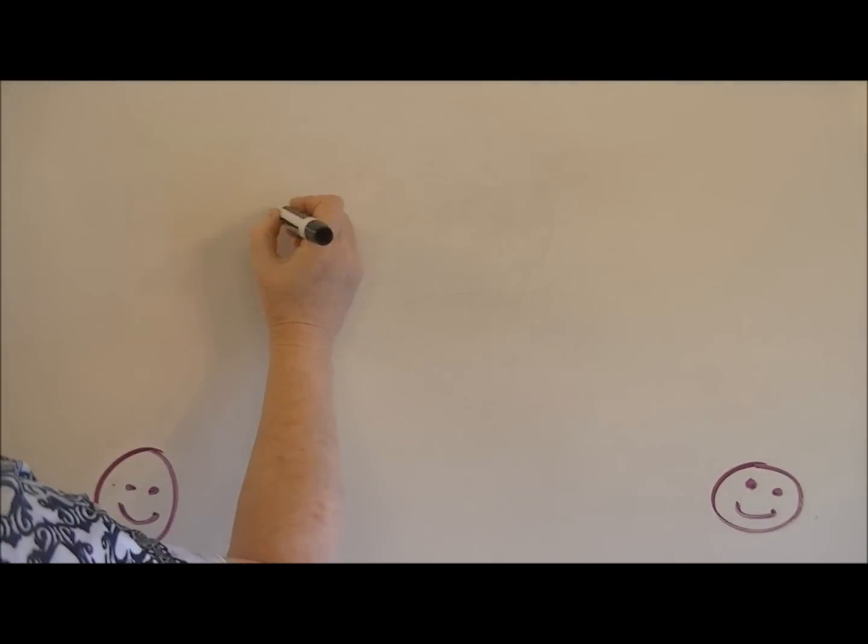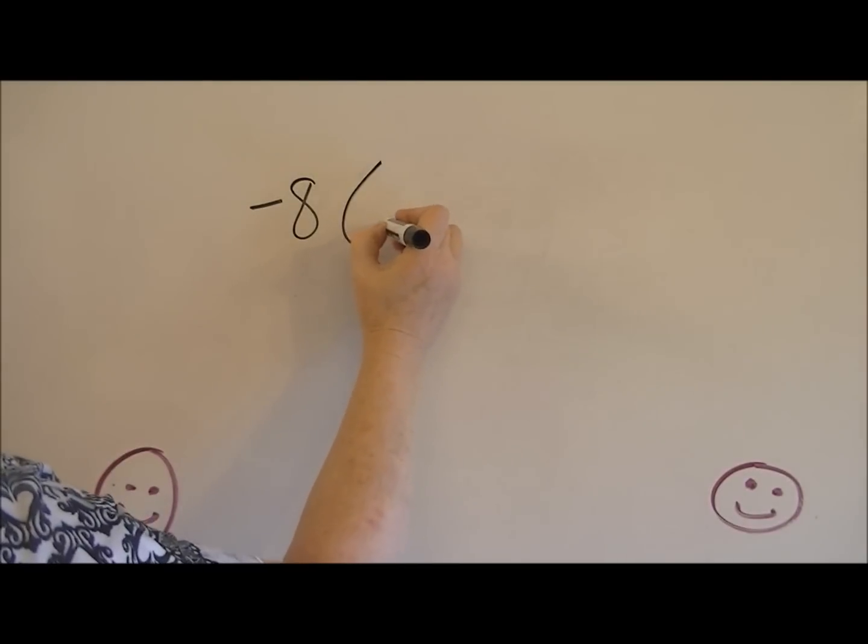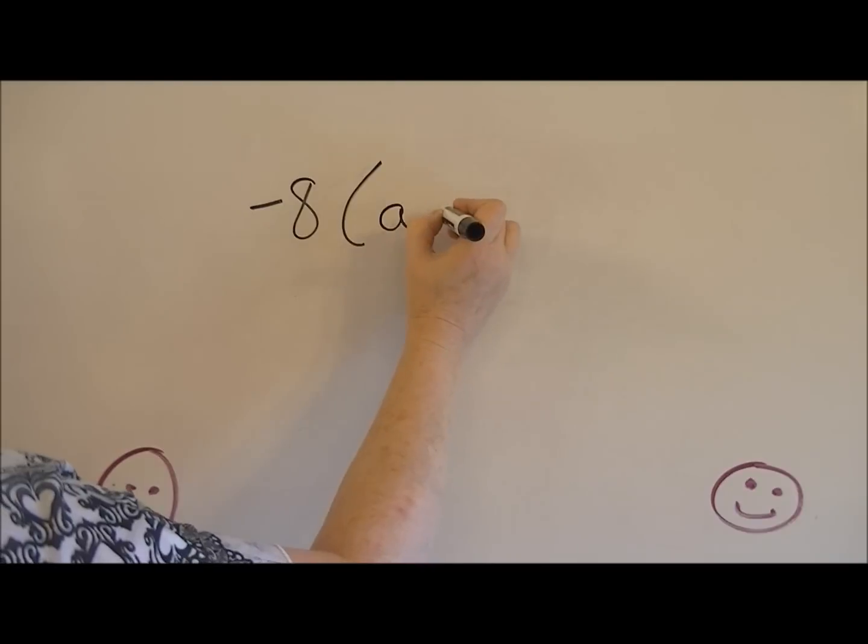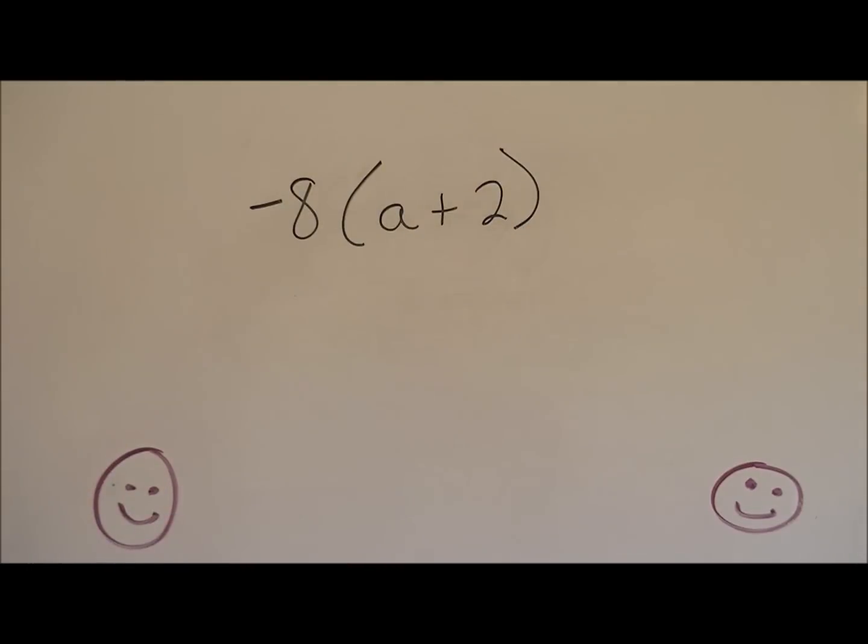Now I'm going to make it a little bit harder. This would be a 7th grade equivalent pre-algebra. Let's do negative eight times a plus 2. This time, I'm going to multiply negative eight times a, which would be negative 8a. Now I'm going to multiply the negative 8 times 2, which would be negative 16.